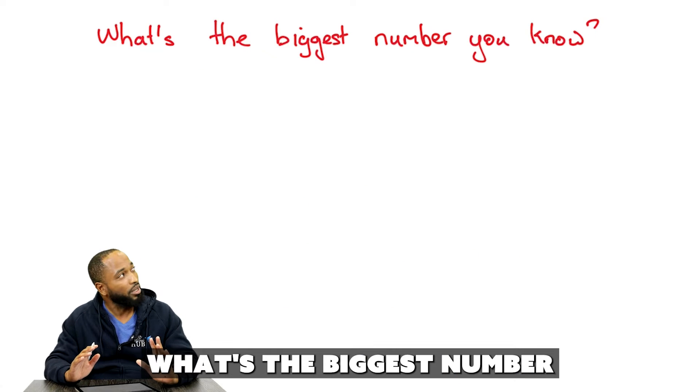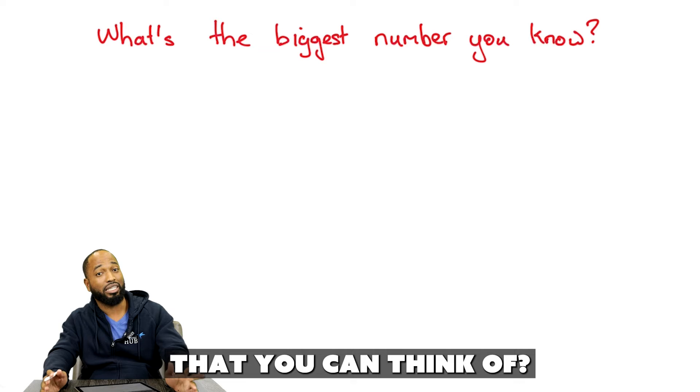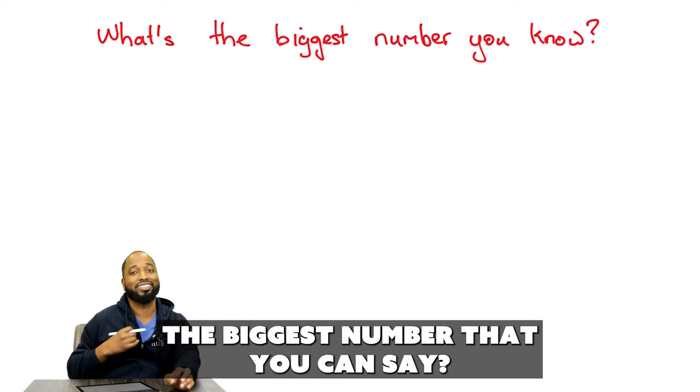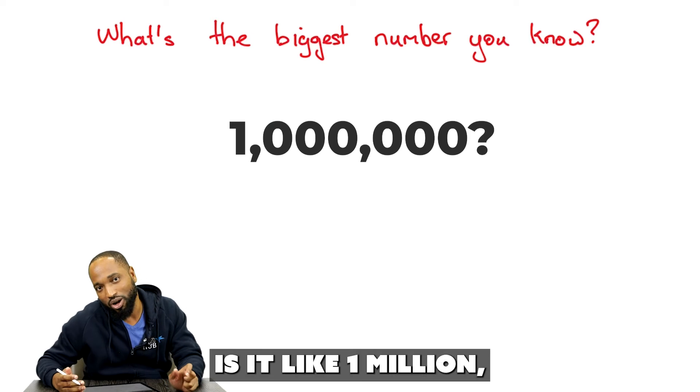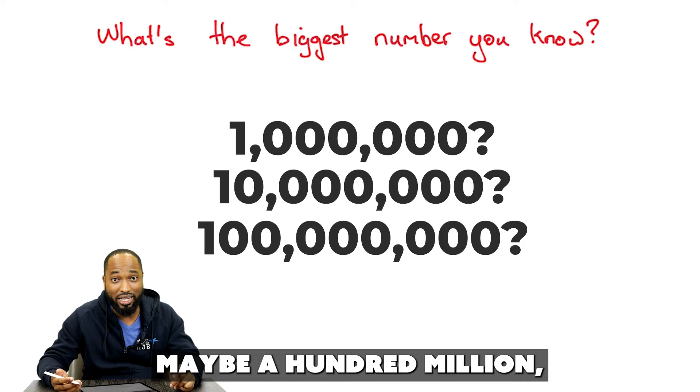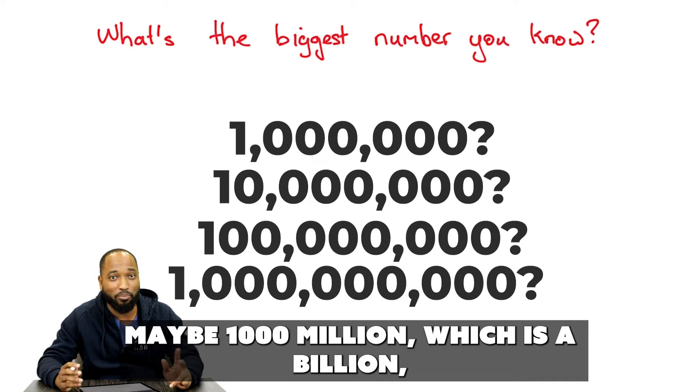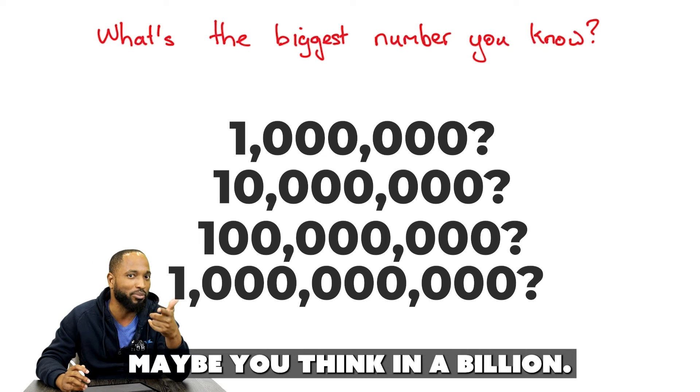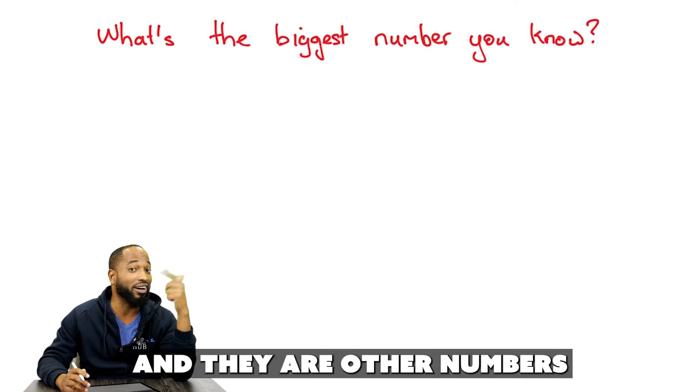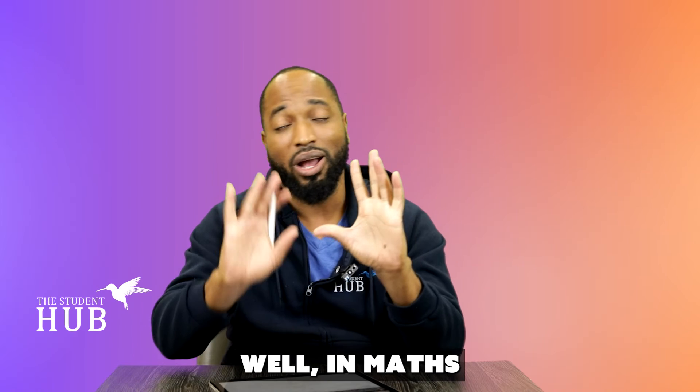So, thinking about any number, what's the biggest number that you can think of? The biggest number that you can see. Is it like 1 million? Maybe 10 million. Maybe 100 million. Maybe 1,000 million, which is a billion. Maybe you're thinking a billion. What's bigger than a billion? A trillion? And there are other numbers bigger than a trillion.